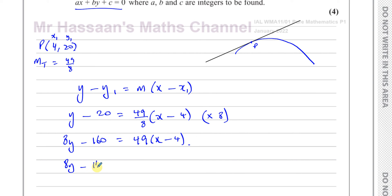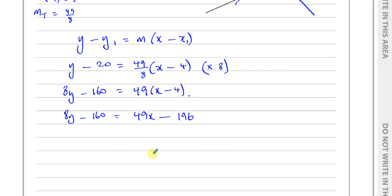Expanding the brackets, 8y minus 160 equals 49x minus, that's 160 plus 36, that's 196. And now we can simplify this.